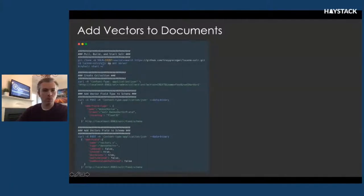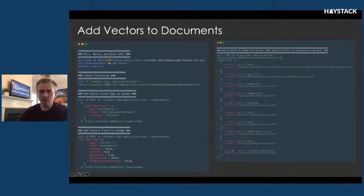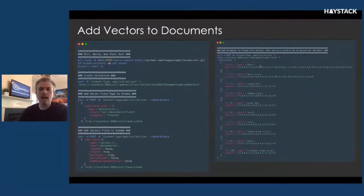Same general setup as before: pull the code, build Solr and start Solr, create a collection, add your dense vector field type to your schema, then create an actual vector field. In this case I'm naming my field vectors_v, making it a dense vector. Then I can add documents just like before — donut, apple juice, cappuccino, cheese pizza, green tea, et cetera. One interesting thing to note in the Solr implementation is that I can actually pass in multiple vectors per field within the document. So instead of being limited to one vector per document, I can potentially do a vector per paragraph, a vector per sentence, or even a vector per word.